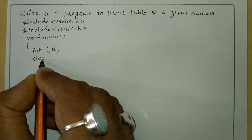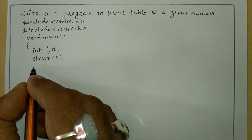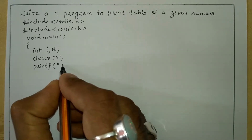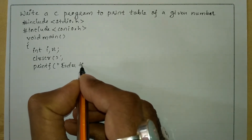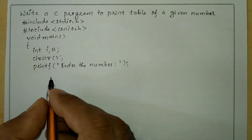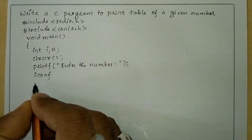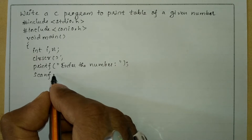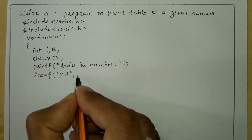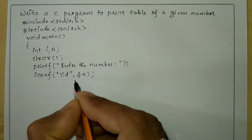Next I'm going to write the clrscr function which is used to clear the screen. Now I'm going to ask the user to enter the number using printf. Then I'm going to receive the value for variable n using scanf, writing the percentage d format specifier in double quotes, followed by comma and ampersand n, then a semicolon.